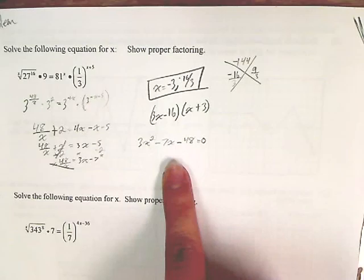And then over here, you subtract the 48 to make it 0, and you just factor it and solve for x.